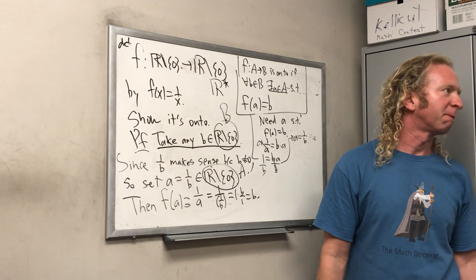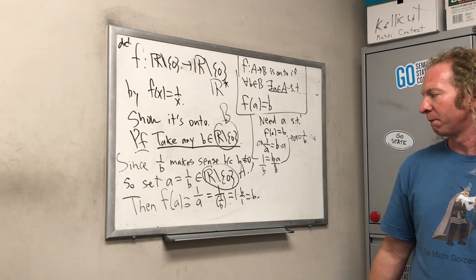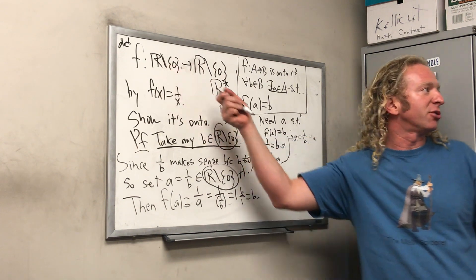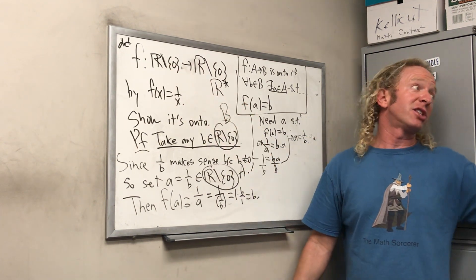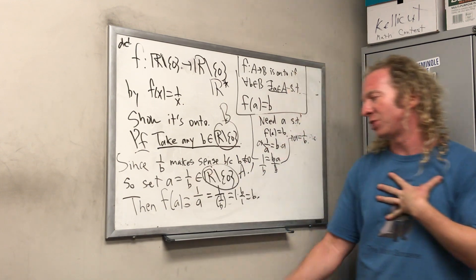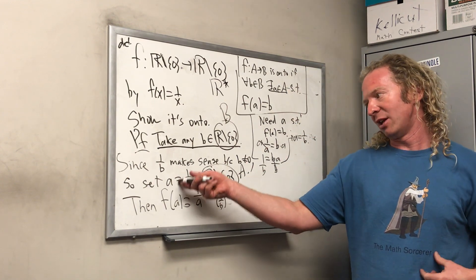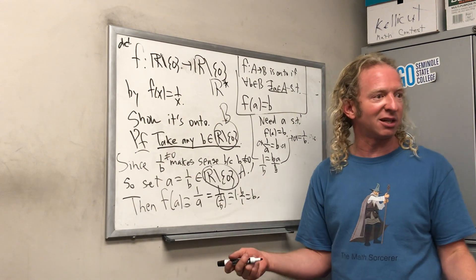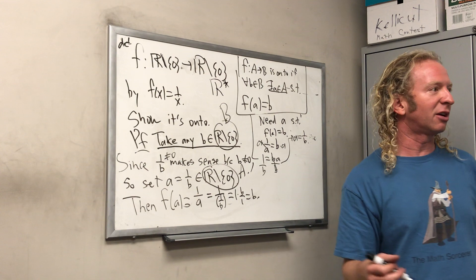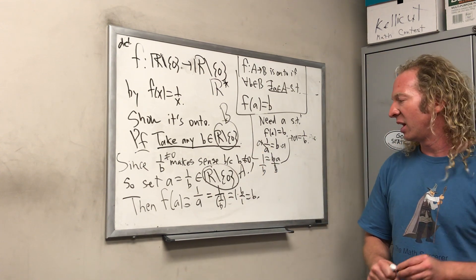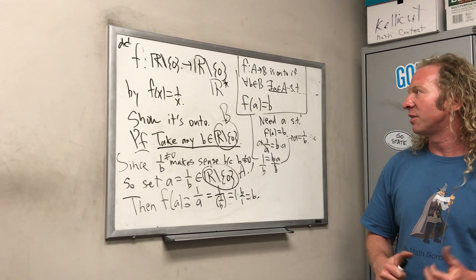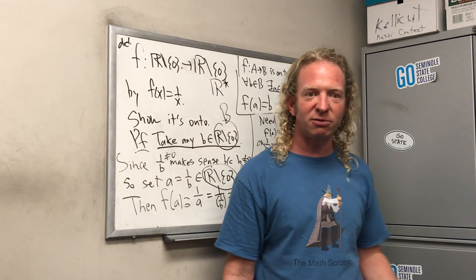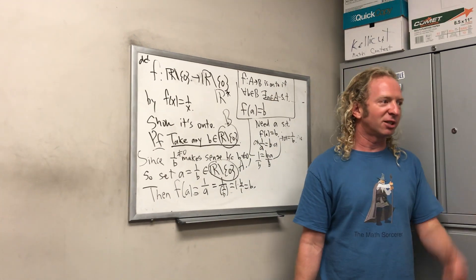You should also explicitly note that a = 1/b is not zero — a grader might take points off if you don't justify that. So that's all I wanted to cover today: injective functions, surjective functions. And if a function is both injective and surjective, it's called bijective.